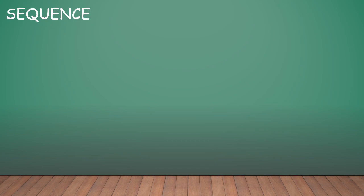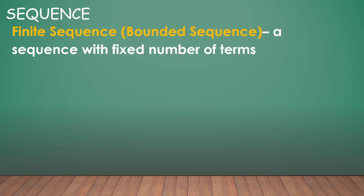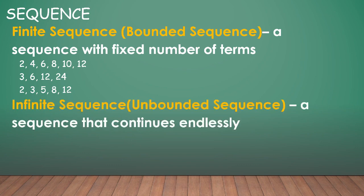A sequence can be a finite sequence or bounded sequence which is a sequence with fixed number of terms such as 2, 4, 6, 8, 10, 12 with only 6 terms, or 3, 6, 12, 24 which has only 4 terms, and another one is 2, 3, 5, 8, 12 which has only 5 terms.